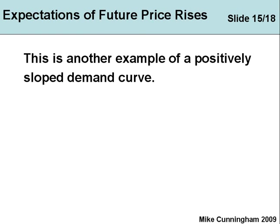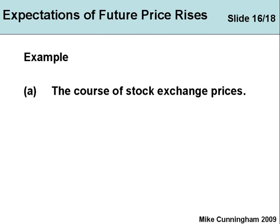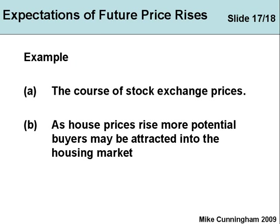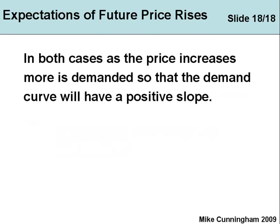There are other exceptions: expectations of future price rises. You could say it's really not a demand curve because it links prices over time, but we'll set that aside for the moment. For example, on the stock exchange: if share prices are rising, people might want to buy more shares, which makes them rise even further — it's cumulative causation. If share prices are falling, people will sell. That's a positive relationship: prices falling, people selling; prices rising, people buying. The same happens in the housing sector — when house prices are rising dramatically, lots of people want to buy; when they are falling, the market is reversed. In both cases, as the price increases, more is demanded, so the demand curve has a positive slope.